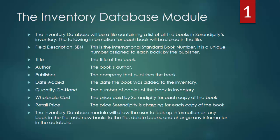The inventory database module is basically our database. It will have several fields: the ISBN which is the ID for each book, the title of the book, the author, the publisher, the date added which is when the book was added to the inventory, quantity on hand which is the number of copies of that particular book, the wholesale cost which tells us how much money we have tied up in the current inventory, and the retail price which is the price at which we are selling each book.